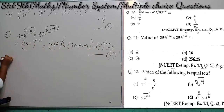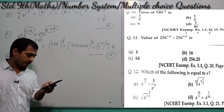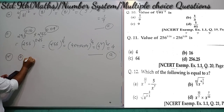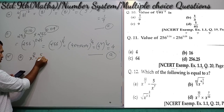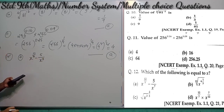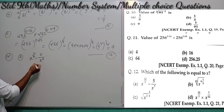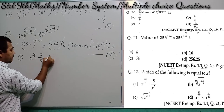Moving to the final question — question number 12: which of the following is equal to x? We need to check each option by simplifying. Option A, x^(12/7−5)/x^(5/7), cannot be simplified to x.